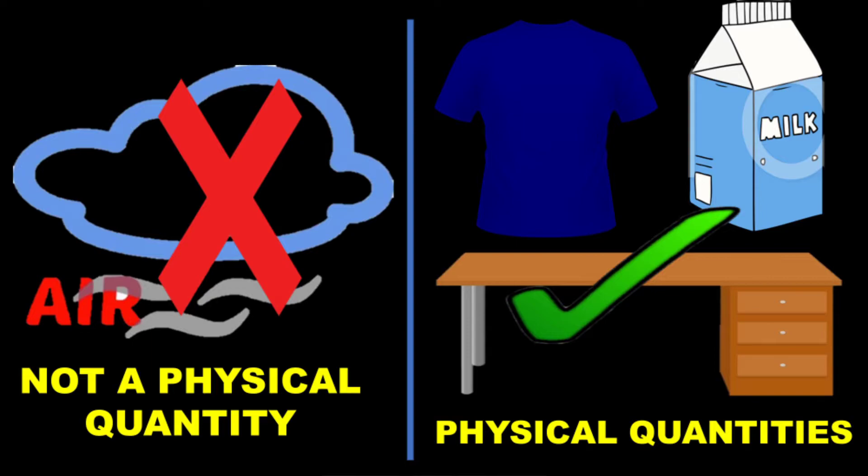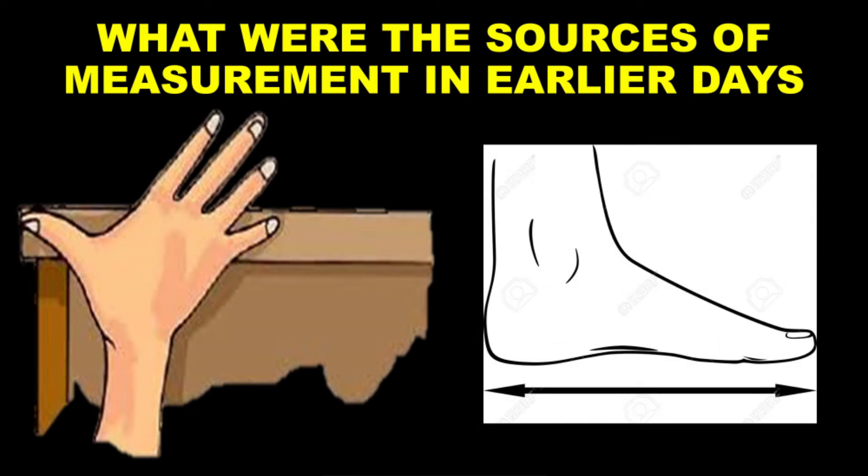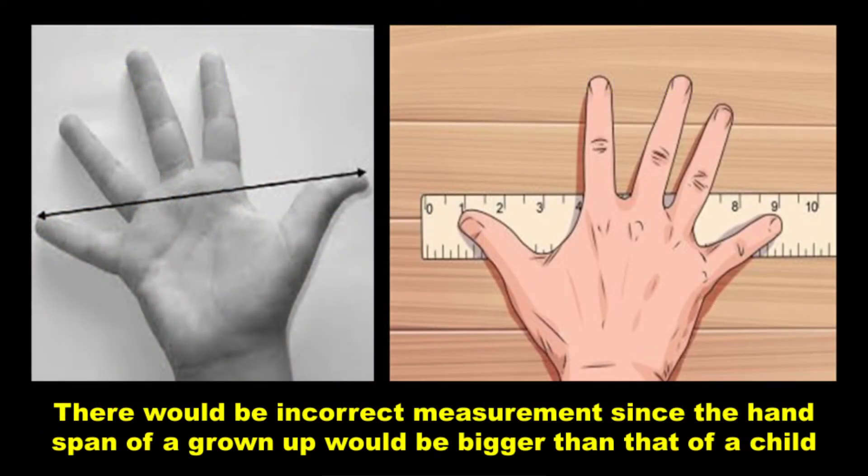So now what is measurement? Kaisa naapte hai? In older days, people used to use their hands, their feet to measure. Hatheli se naapte te, jis ko abhi ham hand span bolte hai. At that time, if you are measuring your study table with your hand span and your father is also measuring the same study table with his hand span, to measurement mein gad bad ho jayega. Why? Because your hand span is small, your father's hand span is big enough. If you get 15 hand span, papa ka 10 aa sakta hai. So the correct measurement was not there.